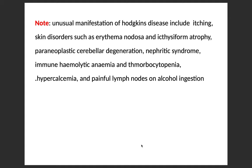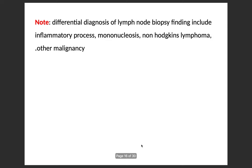An important note: unusual manifestations of Hodgkin's disease include itching, skin disorders such as erythema nodosum and eczematiform atrophy, paraneoplastic cerebellar degeneration, nephrotic syndrome, immune hemolytic anemia and thrombocytopenia, hypercalcemia, and painful lymph nodes on alcohol ingestion. The differential diagnosis of lymph node biopsy includes inflammatory response, mononucleosis, non-Hodgkin lymphoma, or other malignancy.